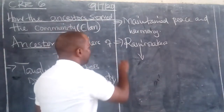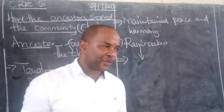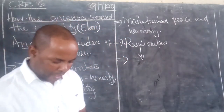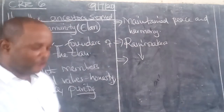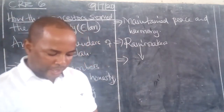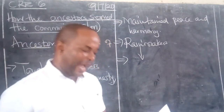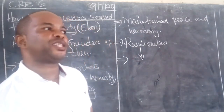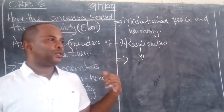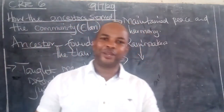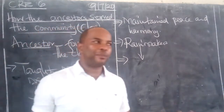Another reason — number four — is that the ancestors also advised members of the clan and punished wrongdoers. Now, this person who died a long time ago — how were they able to advise? How were they able to advise from beyond?